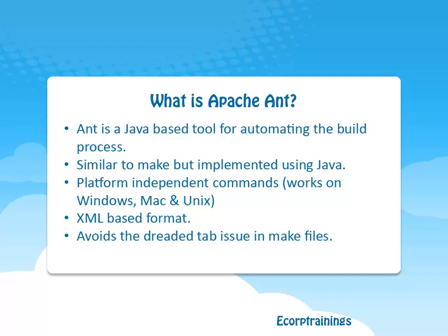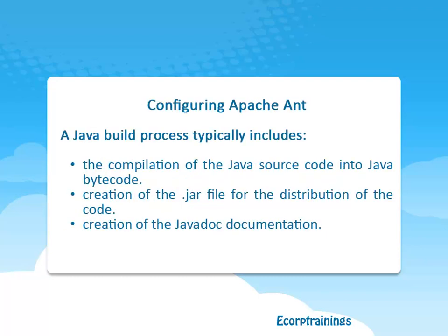Apache Ant is an open-source Apache project. It uses an XML file for its configuration, and the default file name is build.xml.